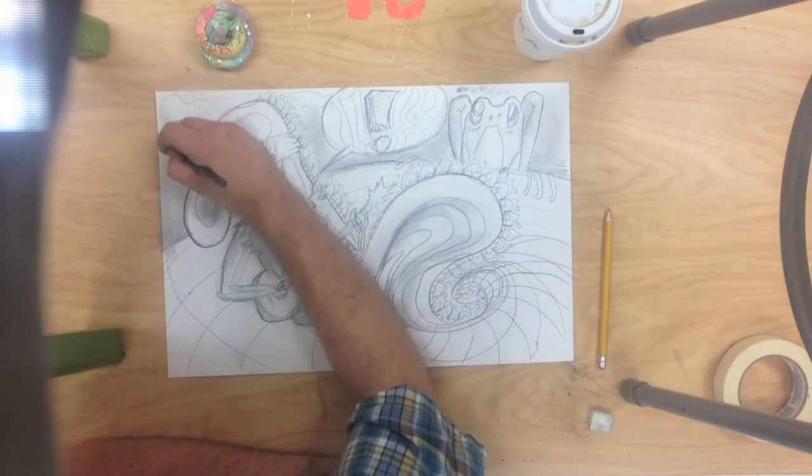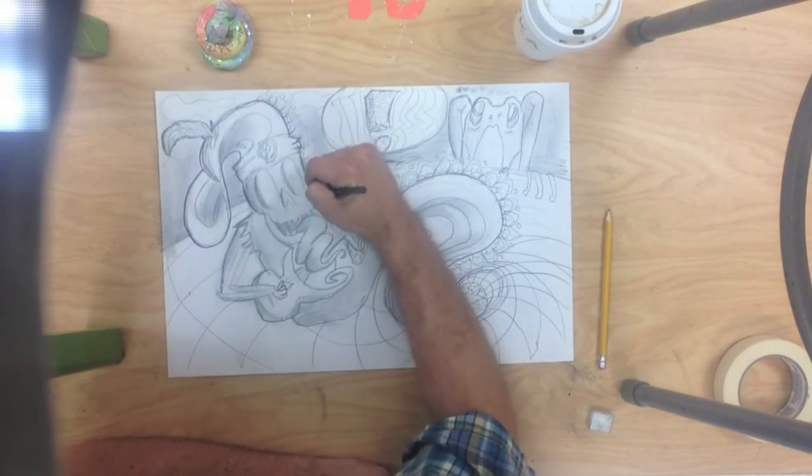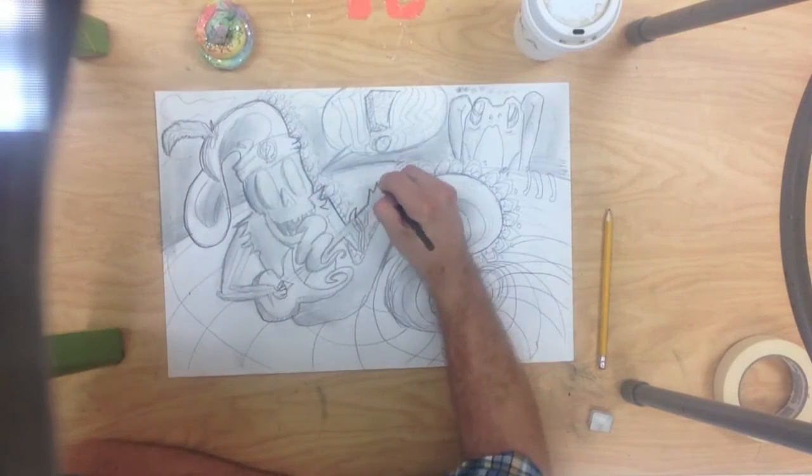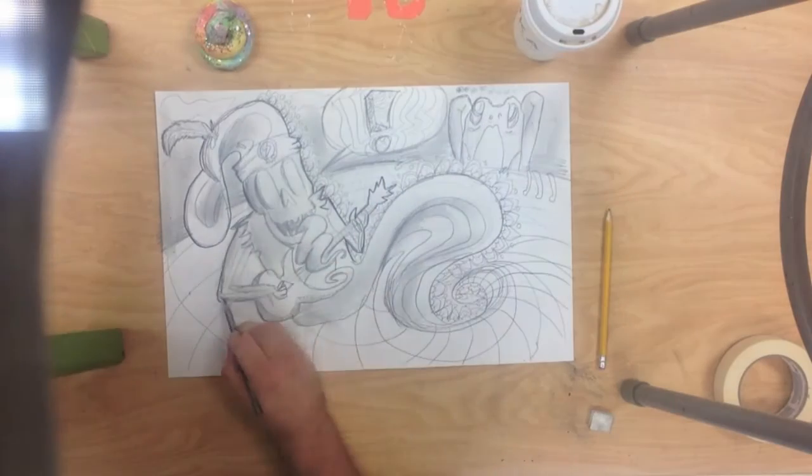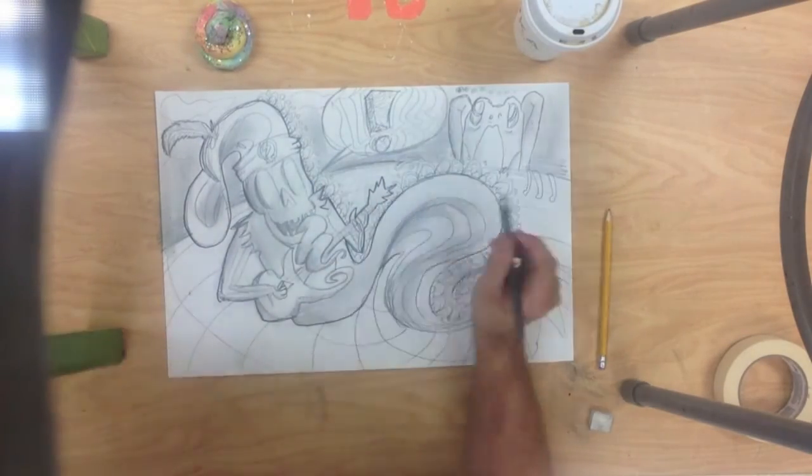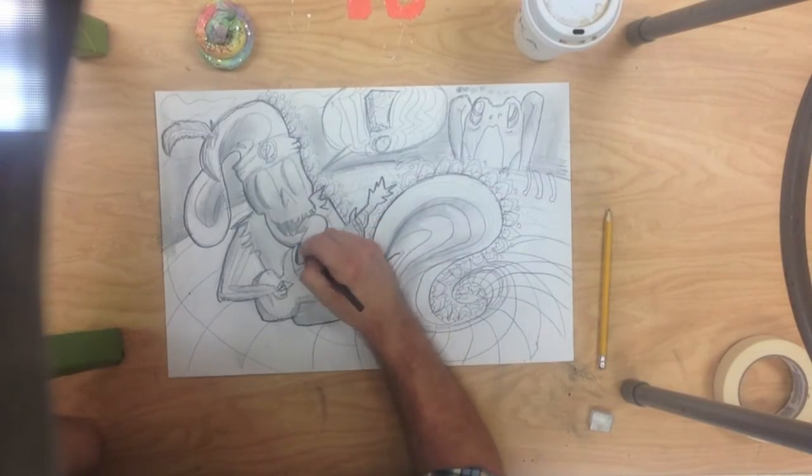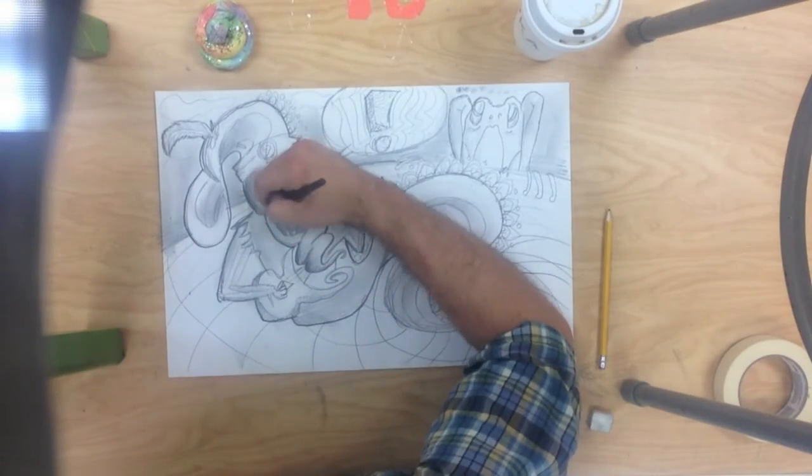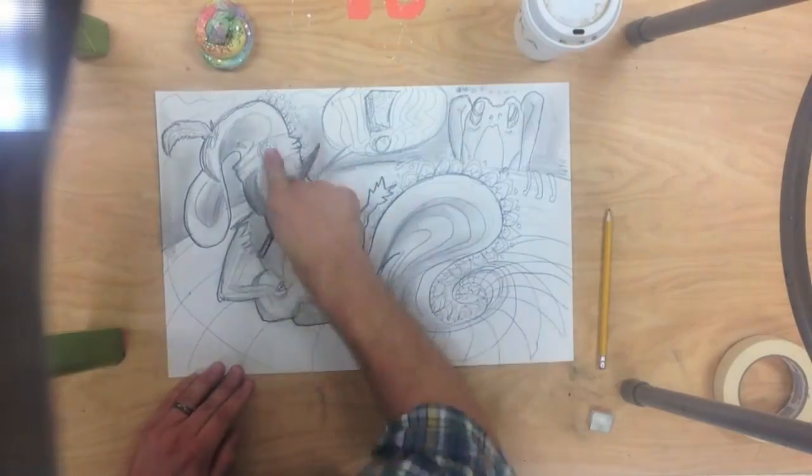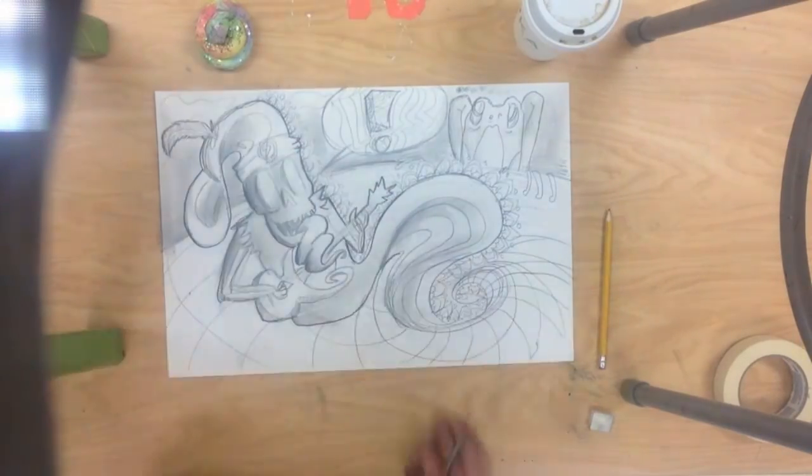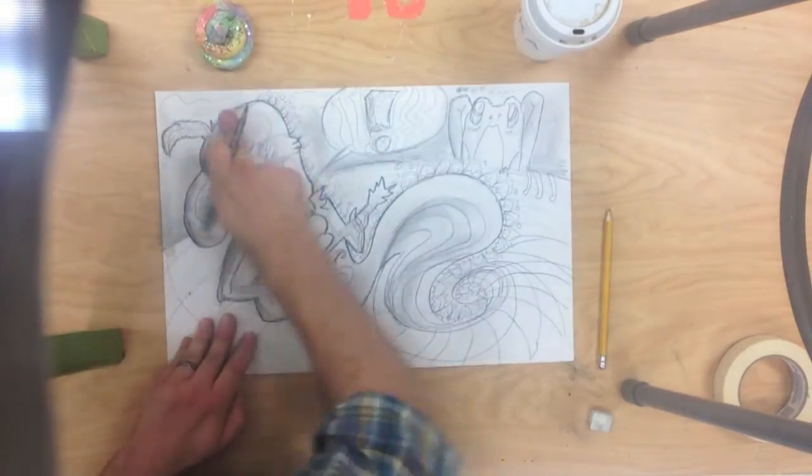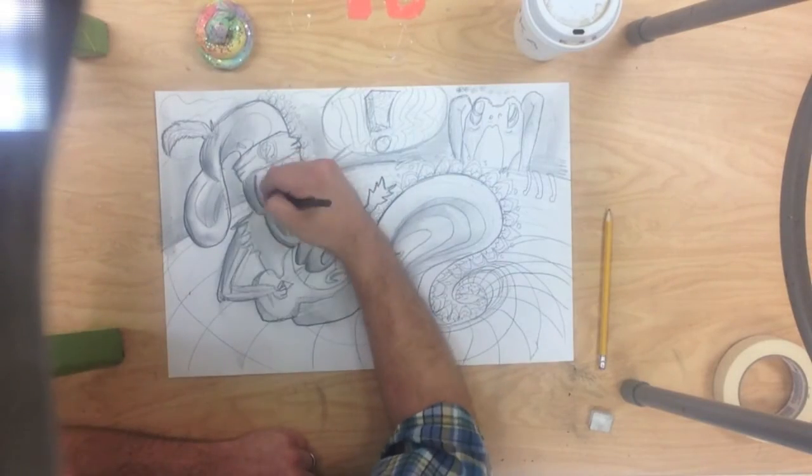In order to get really good at something you have to do it over and over. You have to actually put mileage into it. And you're going to fail over and over, and if you're afraid of failure you're just not gonna do that work. So by all means, doodle fearlessly. Practice being fearless.